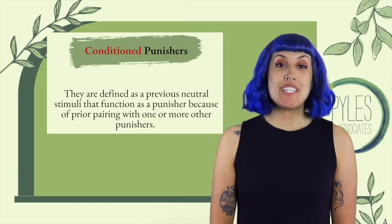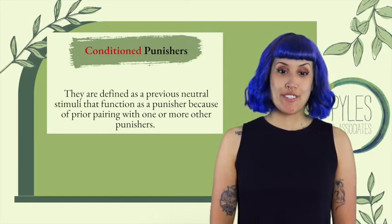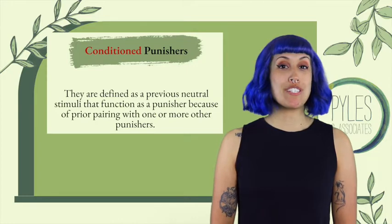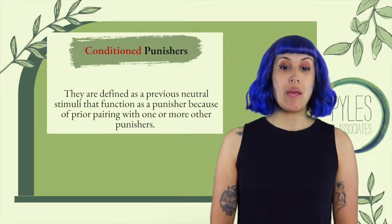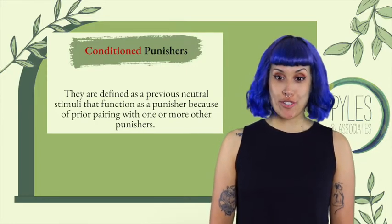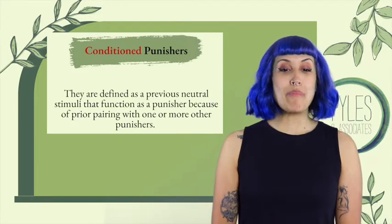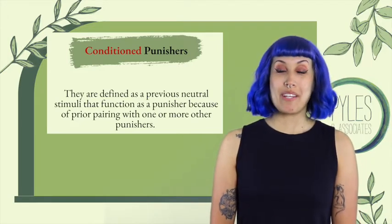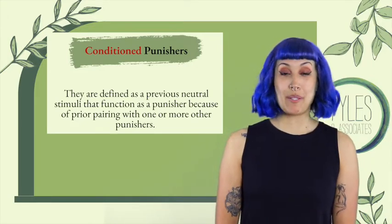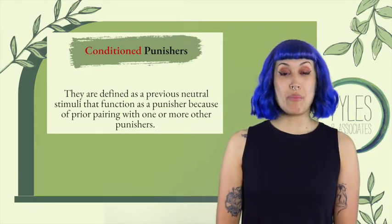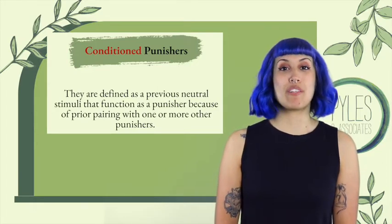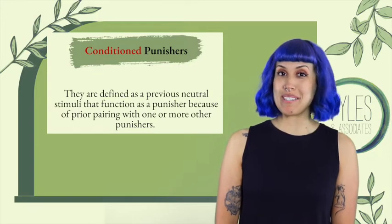Now let's talk about conditioned punishers. This is defined as a previous stimuli that functioned as a punisher because of prior pairing with one or more punishers. For example, we aren't born knowing that if we run a red light we're going to be punished for that behavior. We learn that when we run the red light and receive a ticket, it serves as a form of punishment.